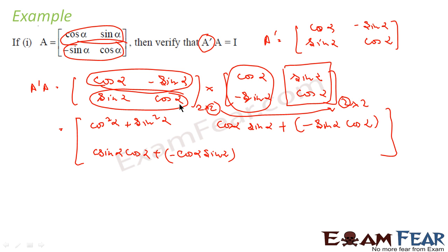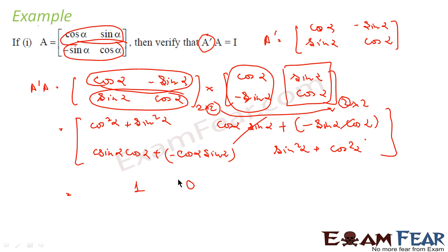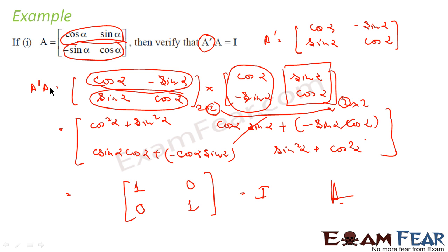Fourth element: sin α × sin α + cos α × cos α = sin²α + cos²α. Now simplifying: sin²α + cos²α = 1 from trigonometry. cos α·sin α - sin α·cos α = 0. Similarly, sin α·cos α - cos α·sin α = 0. And sin²α + cos²α = 1. This gives us the identity matrix I. Thus I have proved LHS = RHS, because A' × A = I.